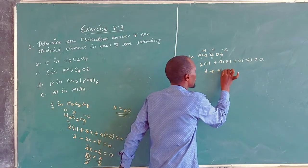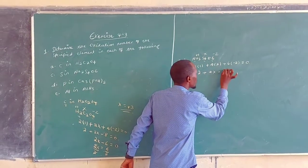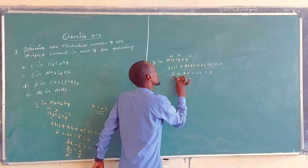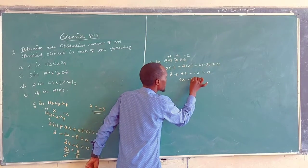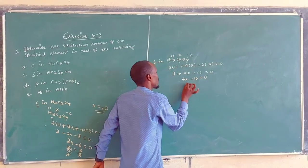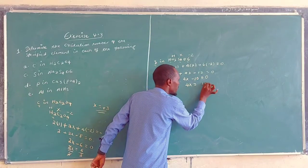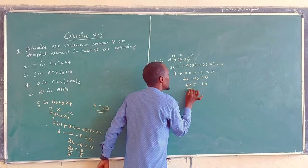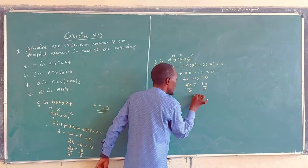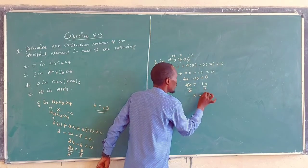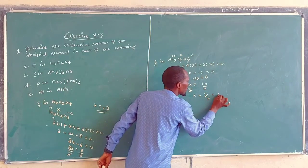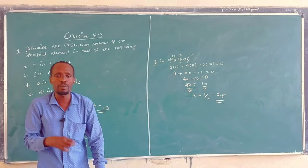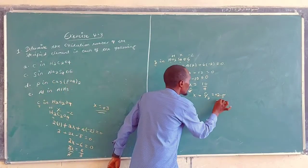So 2 plus 4x plus 6 times minus 2 equals zero. That gives 2 plus 4x minus 12 equals zero, so 4x minus 10 equals zero, meaning 4x equals 10. Dividing both sides by 4, x equals 10 over 4, which is 5 over 2, equal to 2.5. The oxidation number of sulfur in this compound is positive 2.5.